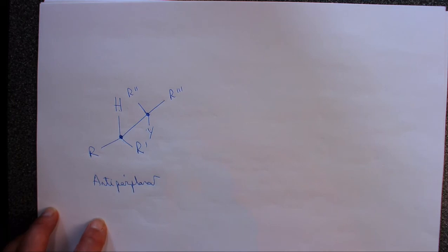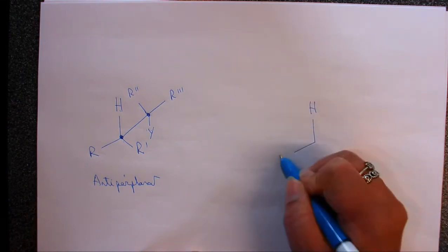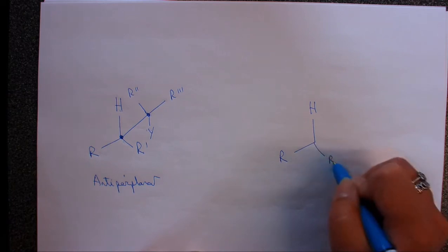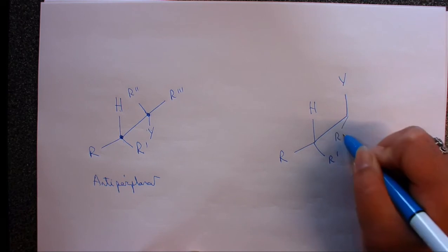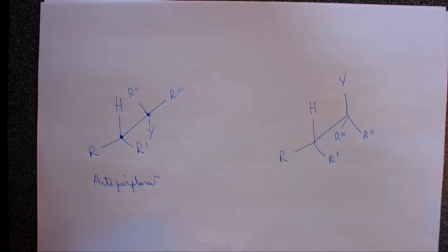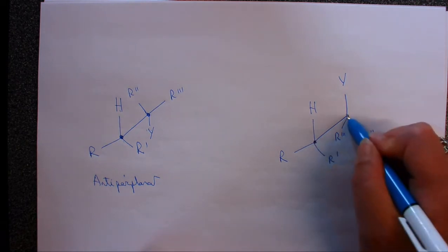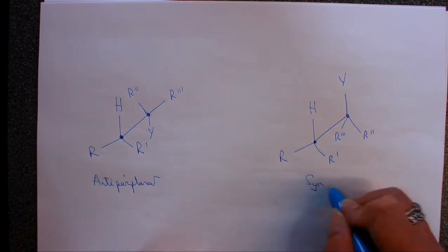So we could do an elimination from that, but there's also another way in which we could draw this molecule so that the groups are still periplanar, still in the same plane. So this could be another way in which we could have the groups so that they are planar, but now these are on the same side. So these are not anti-periplanar, these are sin-periplanar.